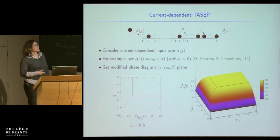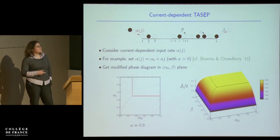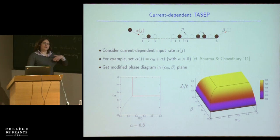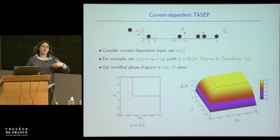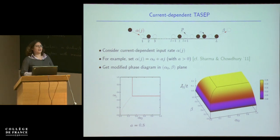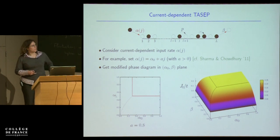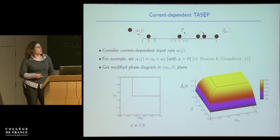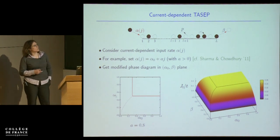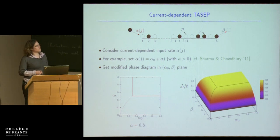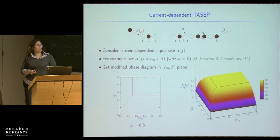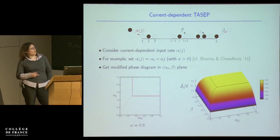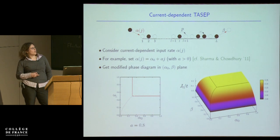This form of input rate was proposed independently by others to model the recycling of ribosomes in protein synthesis, although a slight difference there was that they looked at an instantaneous current rather than the time-average over the whole history, which affects the fluctuations. Taking this linear form of the input rate and using the known mean current for the Markovian case, you can look for fixed points in this current-dependent case and obtain a modified phase diagram. The positive feedback on the input rate increases the size of the maximal current phase, and changes the transition line between the low-density and high-density phases from a straight line to a curved line, which you can calculate.